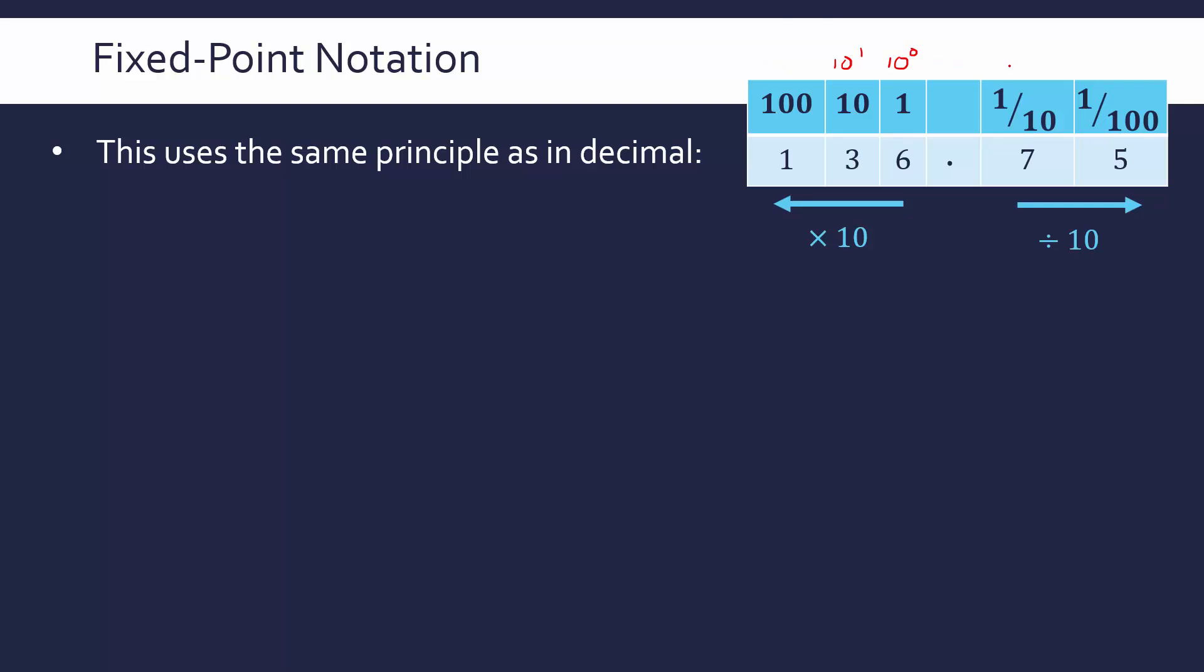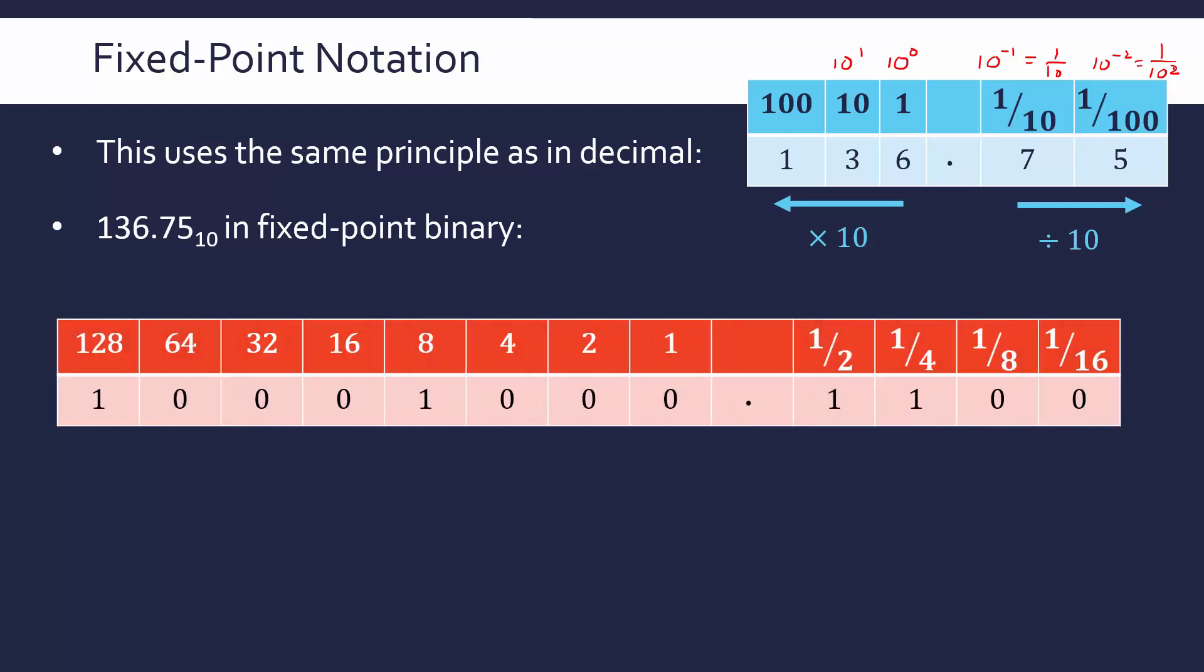So moving left, our column headings are times it by 10. Moving right of our decimal point, they're dividing by 10. This is because fundamentally our column headings are just our base to the power of 0 and the power of 1 and so on and so on. We can go the other way. We can go into negative exponents. So for example, 10 to the power minus 1 is the same as saying 1 tenth. 10 to the power minus 2 is the same as saying 1 over 10 squared, which is 1 over 100. And we're just mapping that principle into binary, which uses base 2 as opposed to base 10.